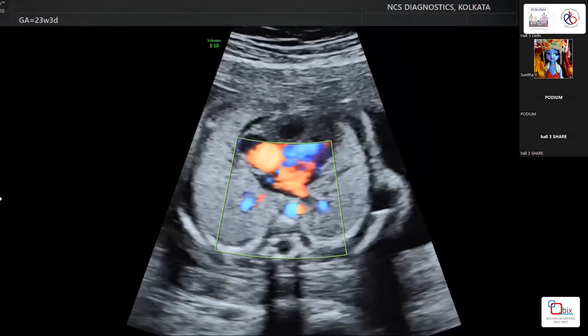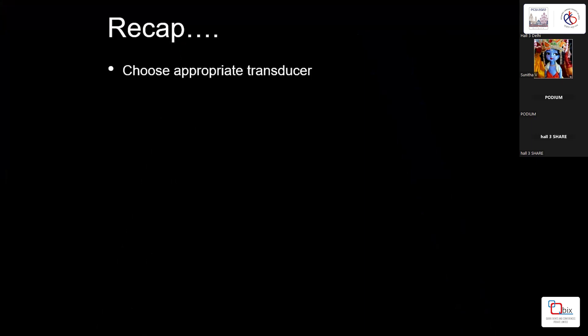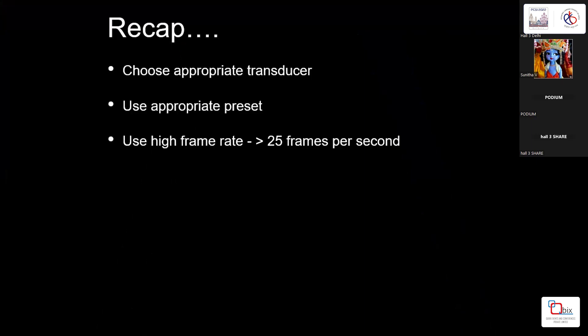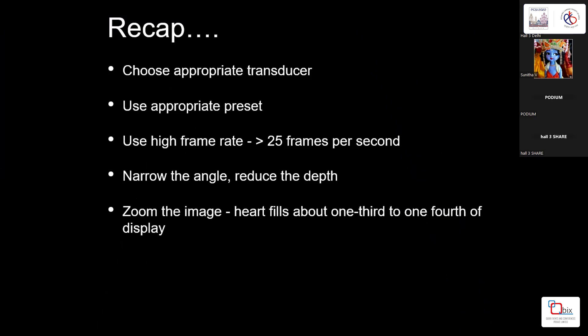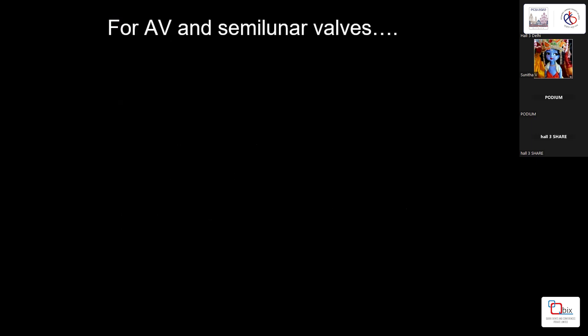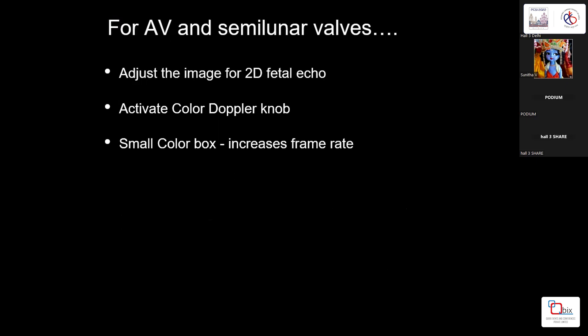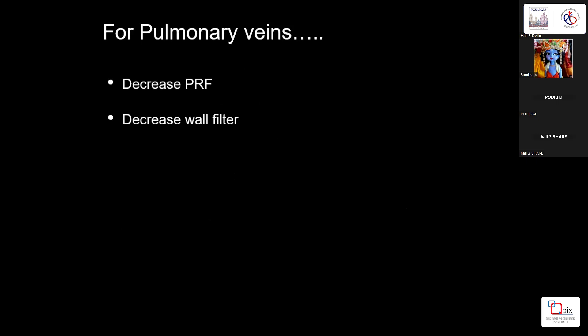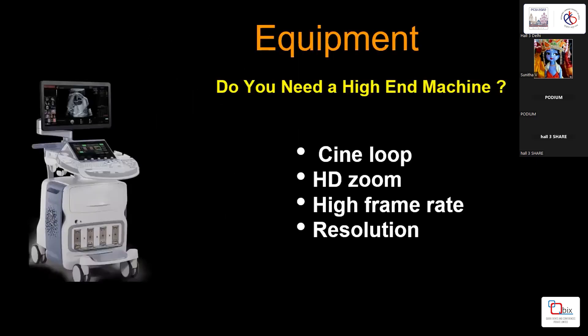To recap: choose the appropriate transducer, use the appropriate preset, use a high frame rate, zero the angle, reduce depth, zoom the image so the heart fills the display, and use cine loop to analyze cardiac and valve motion. For color Doppler: activate the color Doppler knob, use a small color box, decrease color persistence, and adjust PRF. For pulmonary veins, decrease PRF further, decrease wall filter, increase persistence, and use power Doppler.